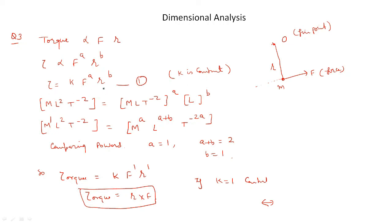Now we write the dimensional formula for both sides. Torque has dimensional formula M·L²·T^(−2). K is a constant equal to 1. F is force with dimensional formula M·L·T^(−2), involved A times. R is distance with dimensional formula L, involved B times. So the right side becomes M^A · L^(A+B) · T^(−2A). The left side is M^1 · L^2 · T^(−2).